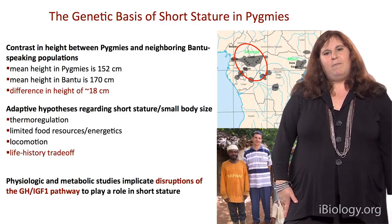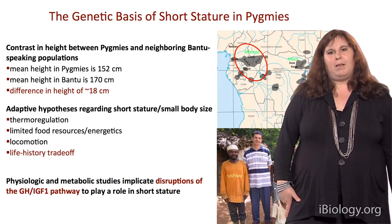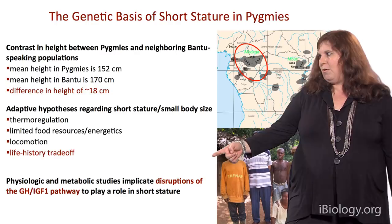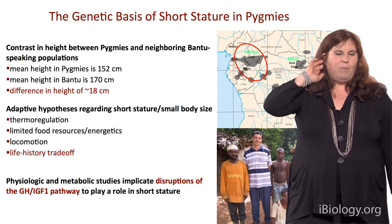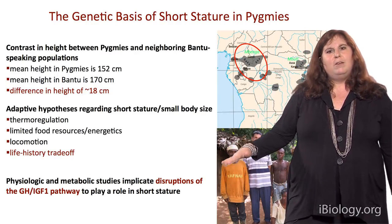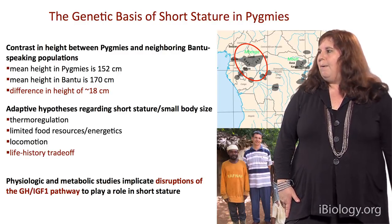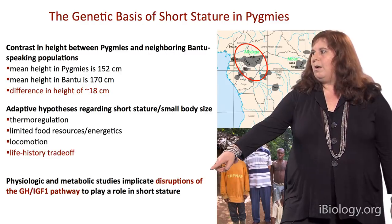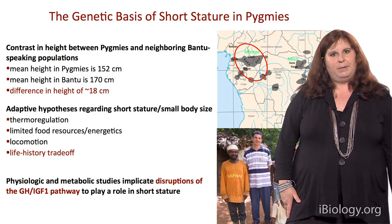There have been only a handful of physiologic and metabolic studies in pygmies, but nearly all point toward disruptions of the growth hormone IGF-1 pathway — in contrast to what we see in European populations. However, there has been quite a bit of dispute about where along this pathway these disruptions are occurring.